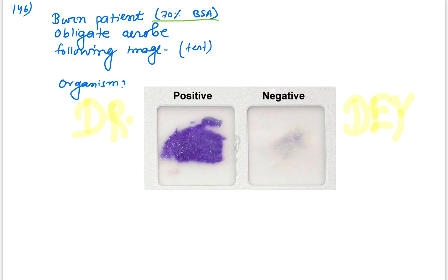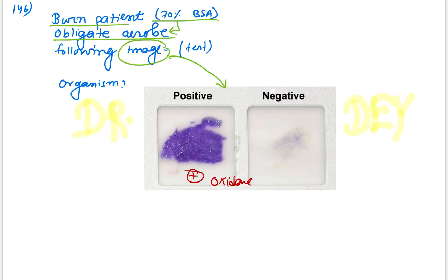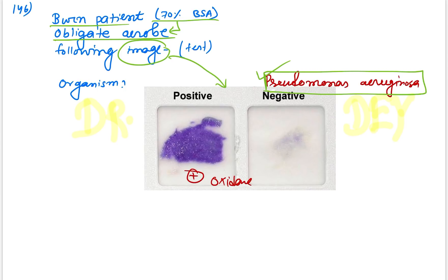Question 146: A burn patient with 70% body surface area burn, the organism is obligate aerobe and oxidase positive. This is Pseudomonas aeruginosa. Pseudomonas infection is very common in burn patients — the answer is Pseudomonas aeruginosa, which is an obligate aerobe and oxidase positive.